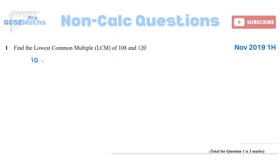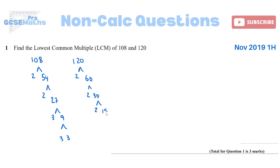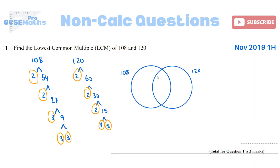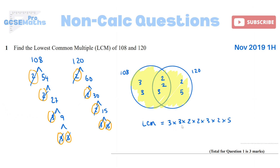Find the lowest common multiple of 108 and 120. I prefer to break them down into their prime factors. Start with 2 for even numbers and keep halving: 108 gives 2, 54, 2, 27, then 3, 9, 3, 3. For 120: 2, 60, 2, 30, 2, 15, then 3 and 5. Put this into a Venn diagram — fill the middle with shared factors: a pair of twos, another pair of twos, and a pair of threes. The remaining factors, 3 and 3 on the left and 2 and 5 on the right, go outside. For the LCM, multiply everything in the Venn diagram: 9 times 2 is 18, times 2 is 36, times 3 is 108, then times 10 gives 1080. For the HCF, multiply only the middle numbers.